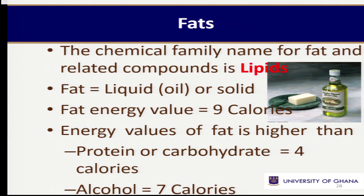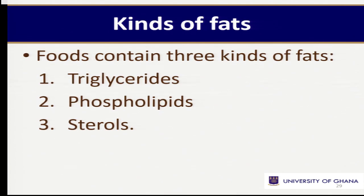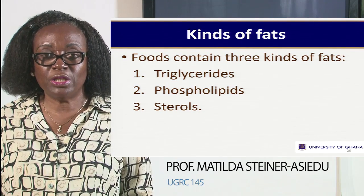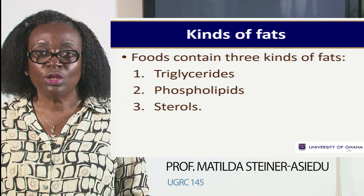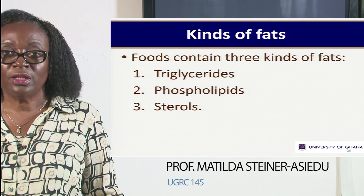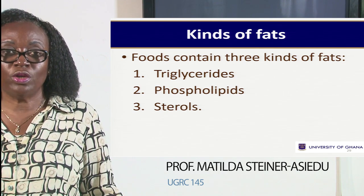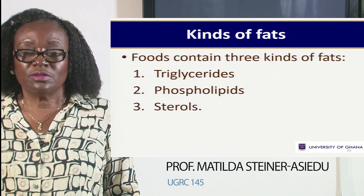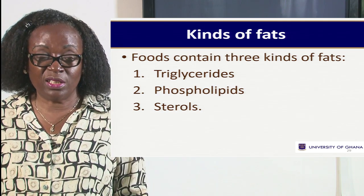We should reduce the amount of fat that we take because of the high amount of energy it contains. There are three main kinds of fats — we call them triglycerides, lipids and steroids. Triglycerides are basically the local oils that we use — the palm oil, coconut oil, groundnut oil, canola oil, olive oil, soybean oil — all of them are triglycerides.